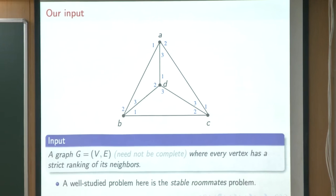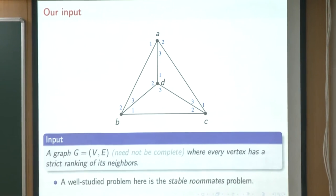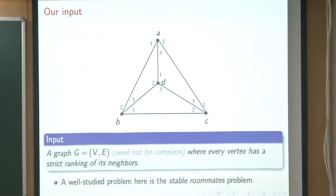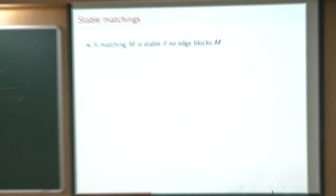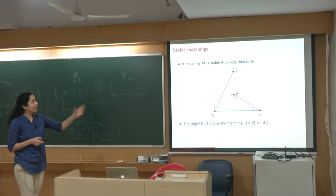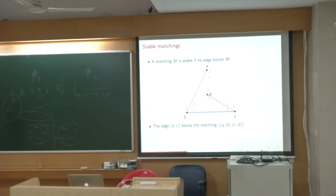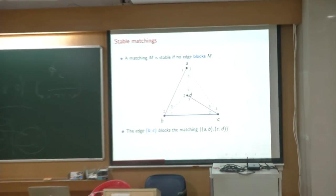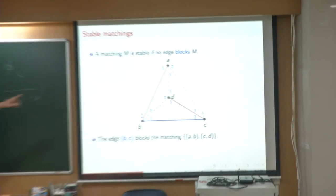What one seeks here is: is there a stable matching? Pairing up vertices corresponds to a matching and we would like to find a stable matching. So what is a stable matching? One that has no blocking edge. An edge blocks a matching if the endpoints of the edge would rather be matched to each other than to their respective partners.